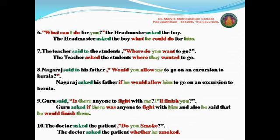Next, the tenth sentence: 'The doctor asked the patient, do you smoke?' Here also a question mark is given — it is an interrogative type. The reported verb: 'asked' — already 'asked' is given, no need to change. Write it as it is. Remove the comma and open quotation. 'Do' is an auxiliary verb — yes/no type — so write 'whether'. After 'whether', bring the pronoun: 'you' will be changed into 'he'. 'Do smoke' — present tense — will be changed into 'smoked'. The doctor asked the patient whether he smoked.